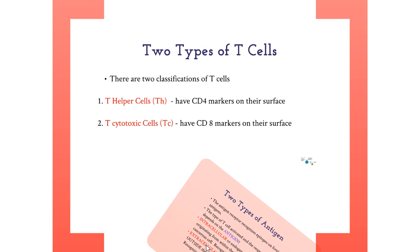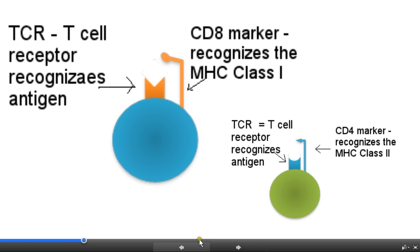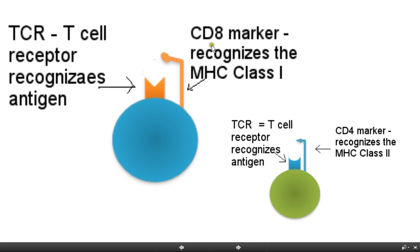All T cells have two distinct proteins on their surfaces. The first is the TCR, the T cell receptor, which is the antigen receptor. Each T cell has a unique TCR. The second protein is a cluster of differentiation marker known as a CD marker. T cytotoxic cells have a CD8 marker and T helper cells have a CD4 marker.